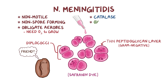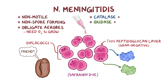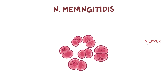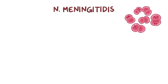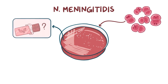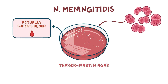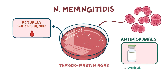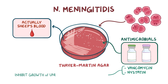Finally, they're catalase and oxidase positive, which means they produce both these enzymes. N. meningitidis grows on a special chocolate medium called Thayer-Martin agar, which mainly consists of sheep's blood. Some antimicrobials, like vancomycin and nystatin, are usually added to the Thayer-Martin agar to inhibit the possible growth of undesired bacteria or fungi, and maximize the growth of Neisseria species.